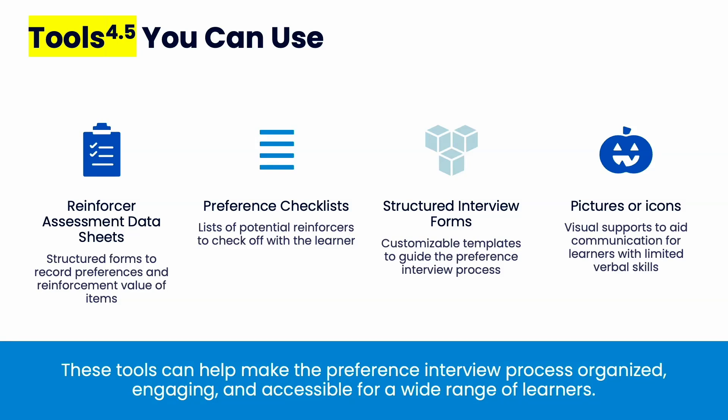Use a Sharpie to cross things out so they can't read it — otherwise if they see it, they'll insist they want that item and you'll have to explain why you can't provide it, like the family doesn't have a car to go out for ice cream. A structured interview form provides customizable templates to guide the preference interview process. You might also need pictures or icons depending on the person's communication preferences.